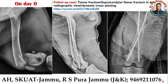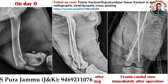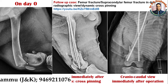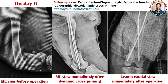This is the radiograph on day 0. This is the mediolateral view of the fractured femur bone before operation. You could see this is the long proximal fracture fragment and this is the very short distal fracture fragment, just above the condyle — that is why it is called the supracondylar fracture.